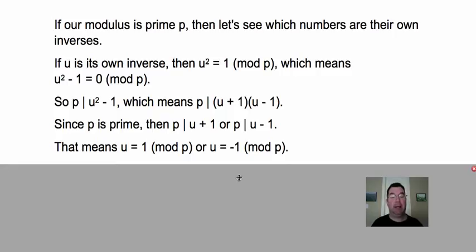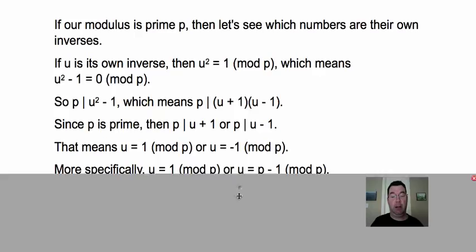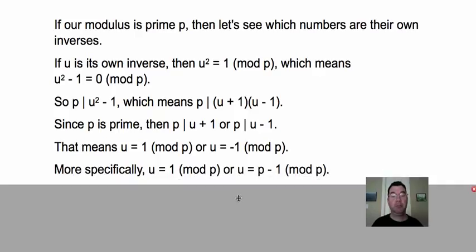And if I put those back in modulo form again, that means that u is either equal to one modulo p, or u is congruent to negative one modulo p. And the negative one I kind of need to fix. I always like my numbers modulo p to be somewhere between zero and p - 1. So since negative one isn't really there, I can add or subtract p as many times as I want in order to get it in the range from zero to p - 1. So for the negative one here, I'm just going to add p to it once to get it within zero to p - 1. And it actually ends up equaling p - 1.